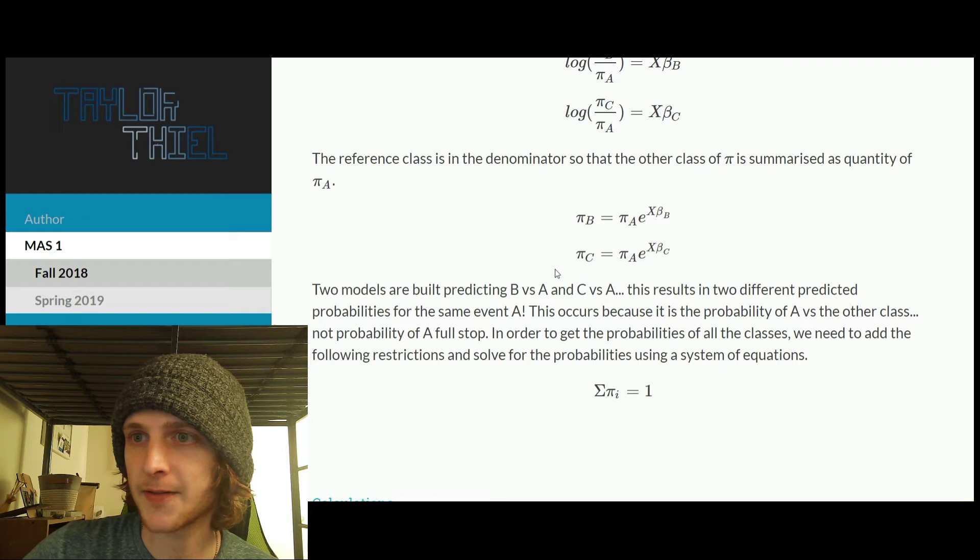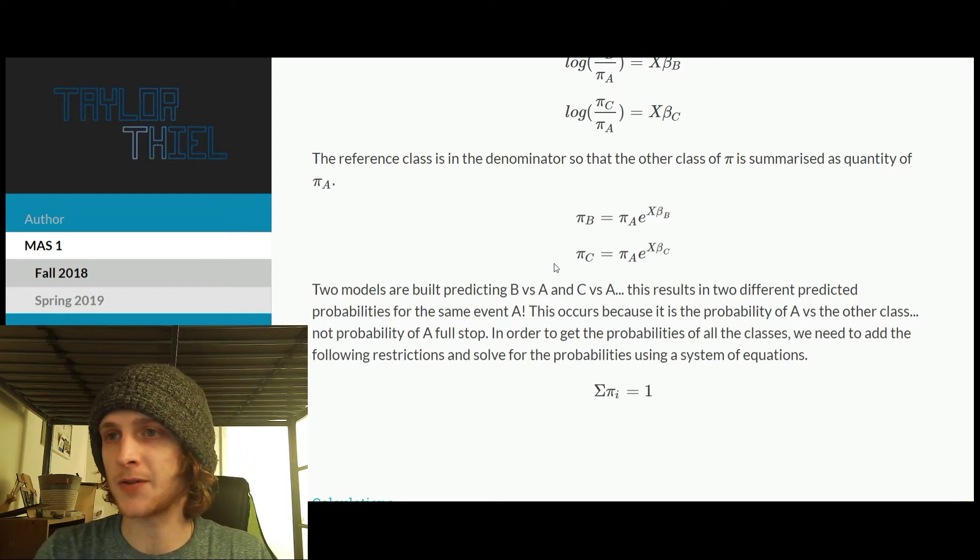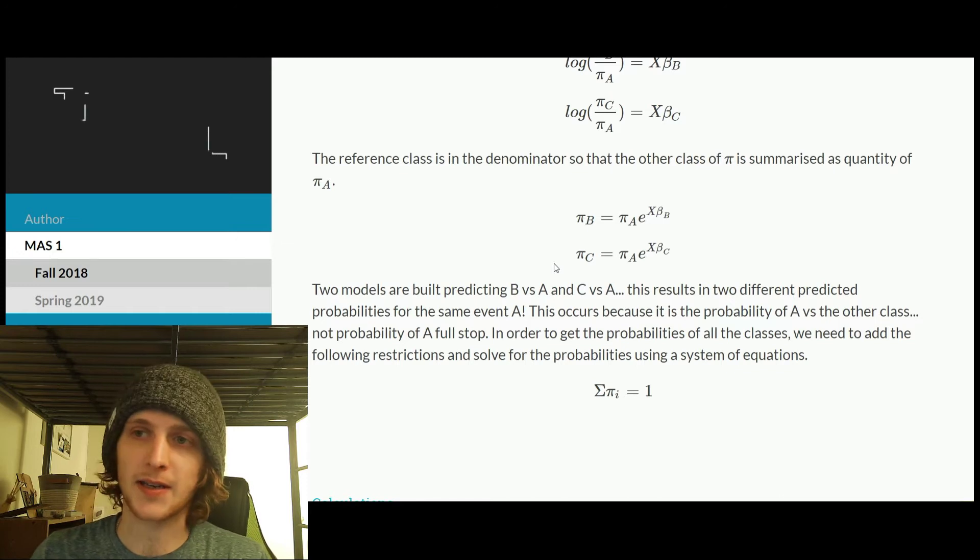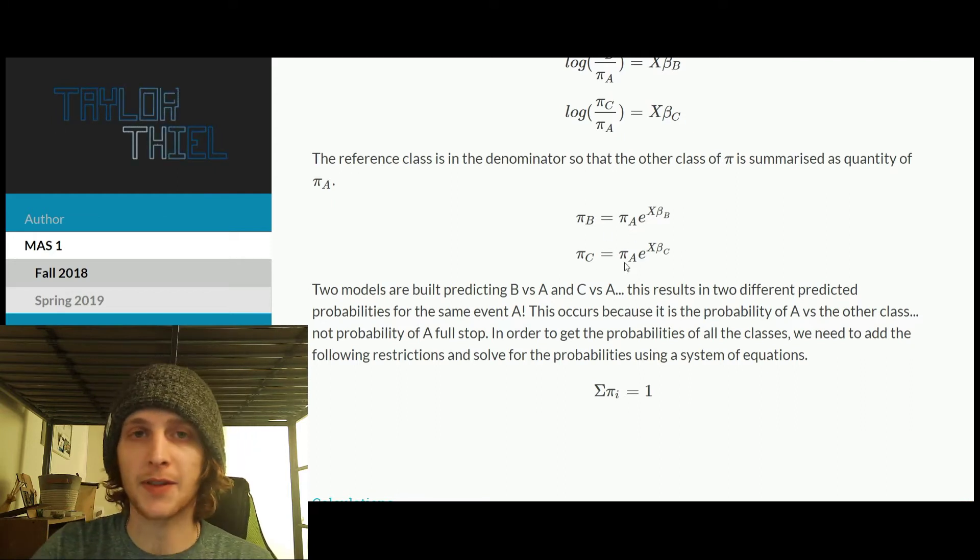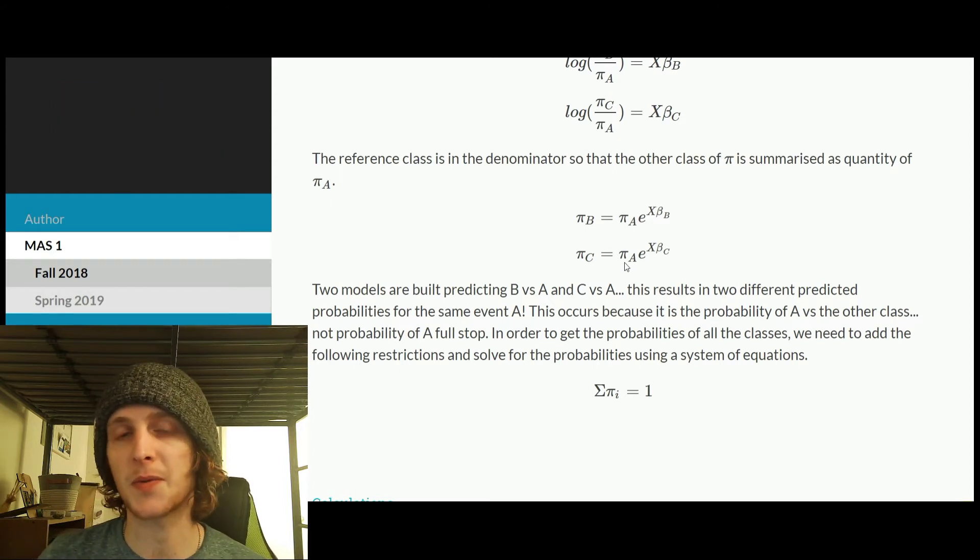But I'm getting ahead of myself. So next what we do is then we can solve for the predicted probability of B and C with respect to A. And again, that's why it's the reference class. And once we have this, along with the final missing piece, which is the sum of all our probabilities, we want to equal one.